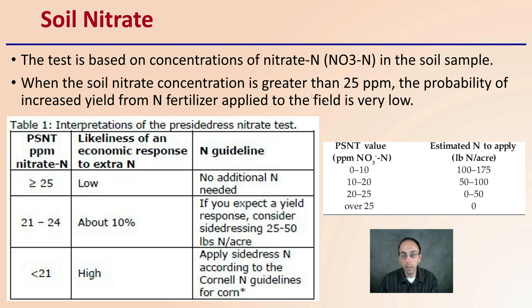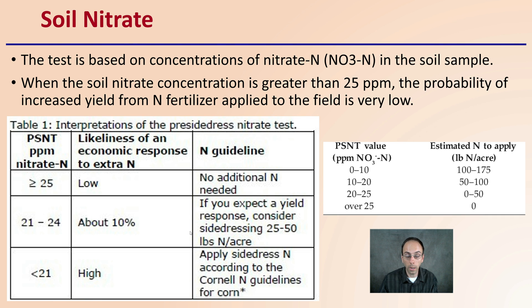With the PSNT test, depending on what the values come back as, you estimate nitrogen to apply in pounds per acre. Above that 25 parts per million range, no additional nitrogen fertilizer would be recommended. If it's at 21 to 24 parts per million, about 10% likely yield response — consider side-dressing with 20 to 50 pounds of nitrogen per acre. Less than 21 parts per million, there are other specific guidelines. At 25 and above, there's really no need to apply any nitrogen fertilizer.